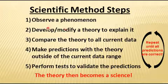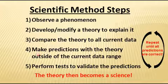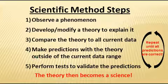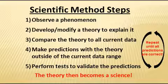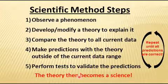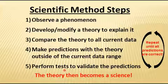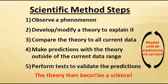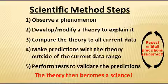At that point we believe we've developed a theory consistent with all the data, and we continue making predictions outside of it. If we go a long enough time with confirmed predictions, the theory has become what we call a science — one that not only correlates information but can predict what will happen outside the range in which the theory was developed.